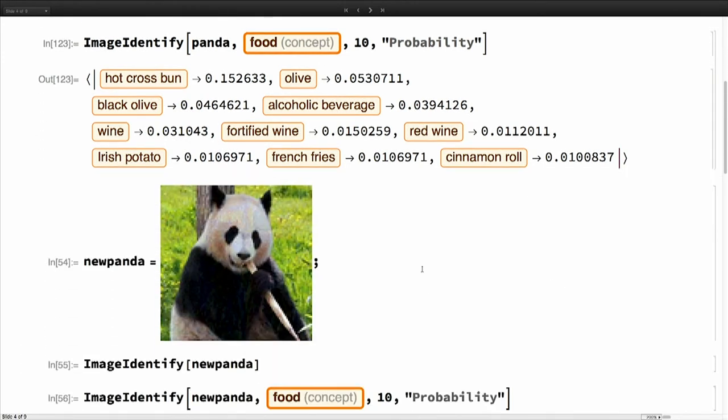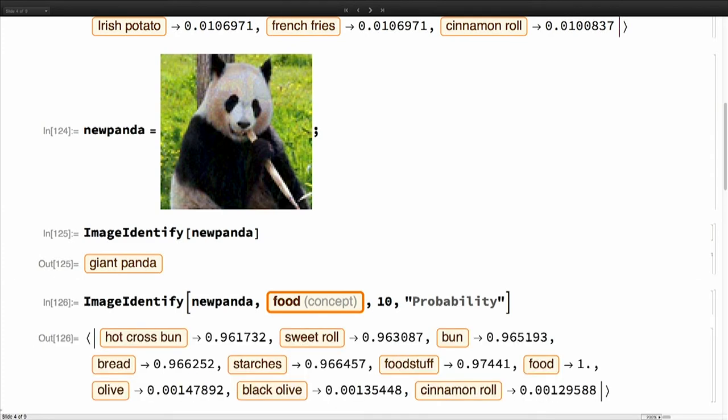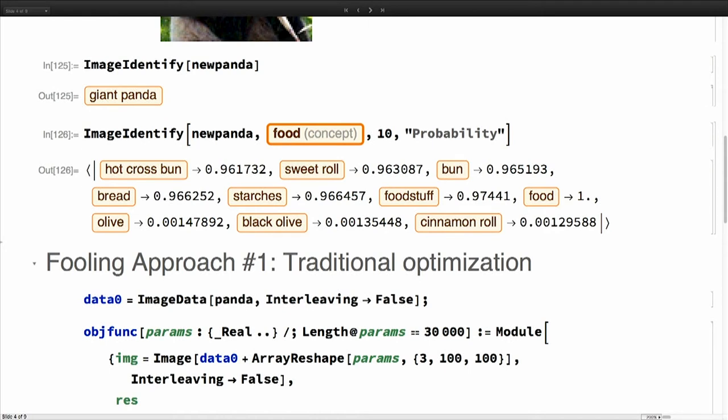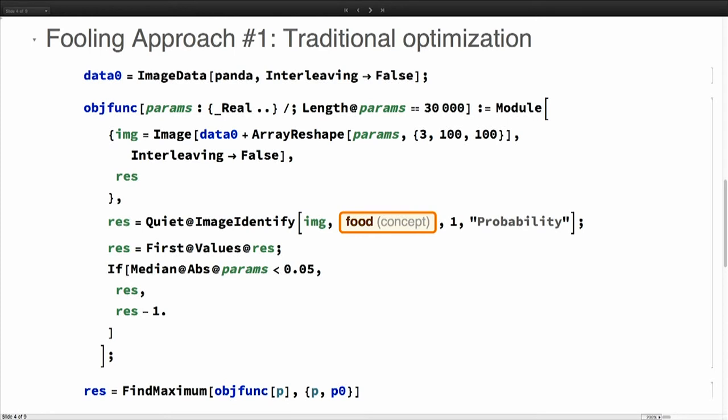Now if I have this new panda that looks pretty much the same as the other one, it's a panda. But now if I ask for foods, then now the network thinks it's 90% confident that this panda is a pastry. This is a classifier, so there's nothing really fantastic about this result. You don't need a deep network to do that, but they can be fooled. How will you make this fooling thing happen? If you do it traditionally, you define an objective function that takes your input image, adds a little delta to it, then you pass it through image identify, you ask for the top probability that it's foods. If the parameters are too big, you just add the penalty because you want a little change. Then you maximize this.